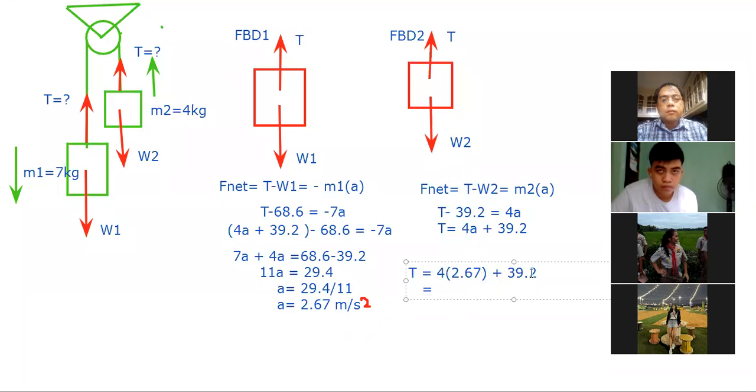Now you will realize here that the tension here will be greater than 39.2 but it is less than 68.6. So the tendency on the left side is to go down. So the weight must be bigger than the tension, but on the right side, the weight must be lesser than the tension. Now can you give me our answer? 49.88, sir. Okay, so the values of the tension and the acceleration.